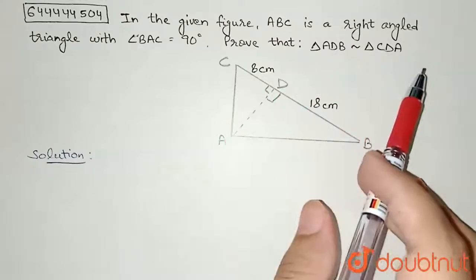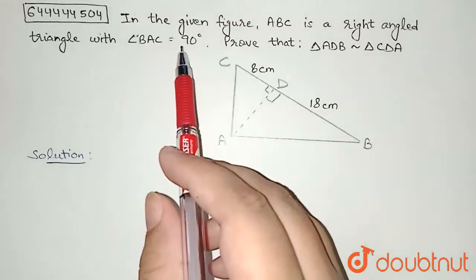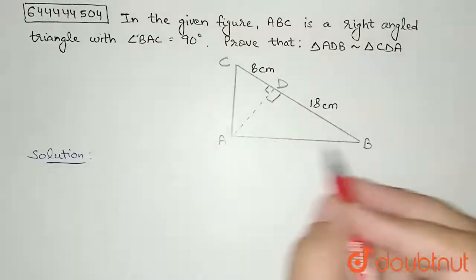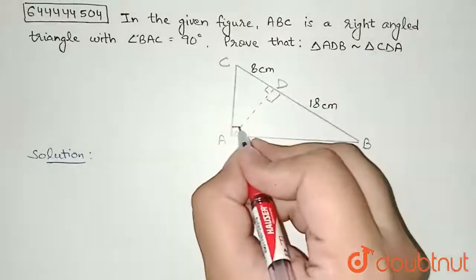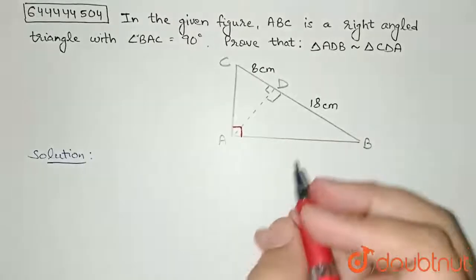We are given a right angle triangle with right angle at angle BAC. So angle BAC is this angle, which is given to us as 90 degrees.